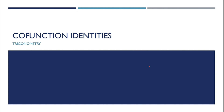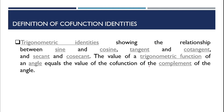Good day everyone, welcome back to this YouTube channel, Kasaligan Vlogs. Today we'll be talking about cofunction identities — it's all about trigonometry. Based on definition, trigonometric identities involve showing the relationship between sine and cosine, tangent and cotangent, secant and cosecant. The value of a trigonometric function of an angle equals the value of the cofunction of the complement of the angle.